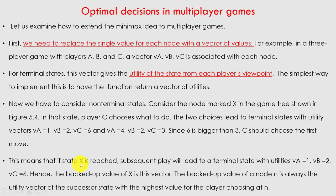If state X is reached, subsequent play will lead to a terminal state with utilities Va1, Vb2, and Vc6. Hence, the backup values for X are this vector. The backup values of a node N are always the utility vector of the successor state with the highest value for the player choosing at N.